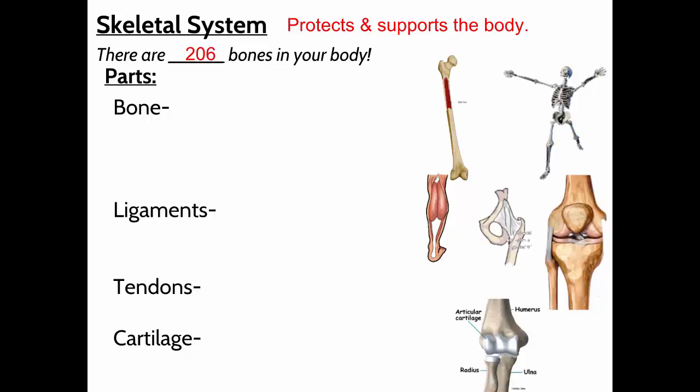Babies have more bones, but what happens is they sort of fuse together — multiple bones become one over time as the baby matures. The skeletal system consists of our bones and also other related parts. Bone is actually a type of tissue — bone is alive. It has blood vessels and nerve endings; it's a living tissue. It grows, and it's a hard tissue made of a calcium compound.